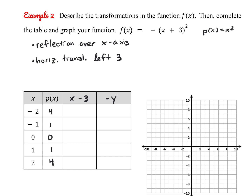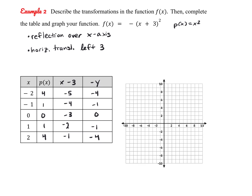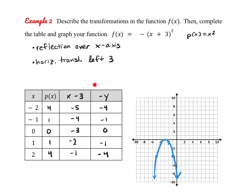Let's transform our coordinates. So x values become: -2 minus 3 is -5, then -4, -3, -2, and -1. For our y values, we make all of them opposite: -4, -1, 0, -1, and -4. Now we can plot our points and see what our parabola looks like: (-5, -4), (-4, -1), (-3, 0), (-2, -1), and (-1, -4). You can see we're using the same method of transforming coordinates we talked about previously in the chapter.